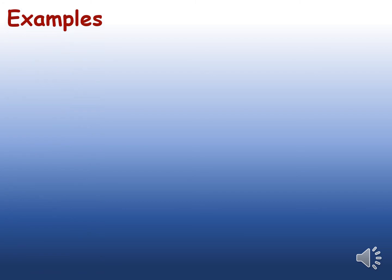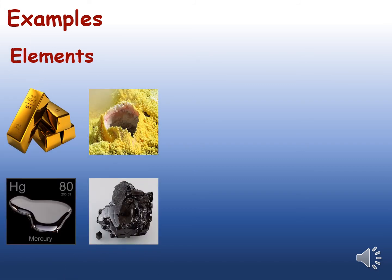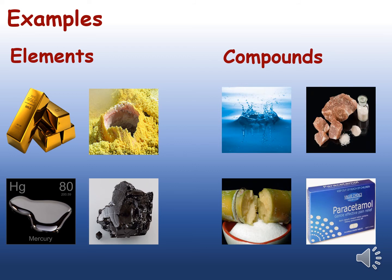Pure substances can be divided into two: elements and compounds. It is usually used to form new products as a result of chemical reaction. Examples of elements are gold, sulfur, mercury, and carbon. Examples of compounds are water, salt, sugar, and paracetamol.